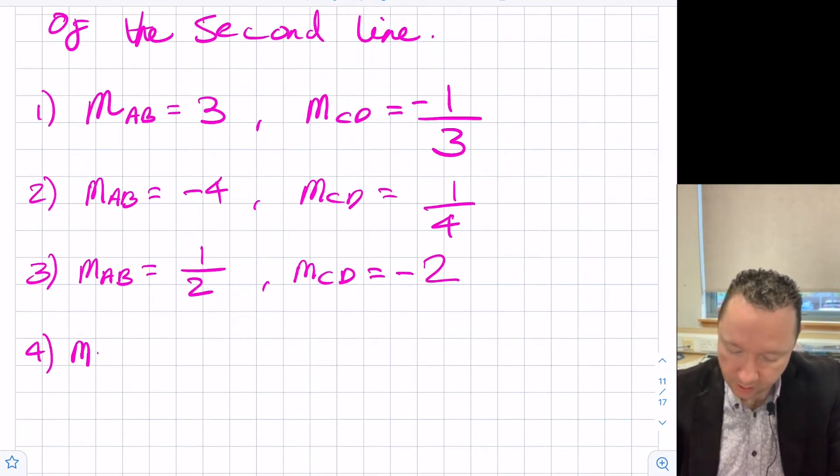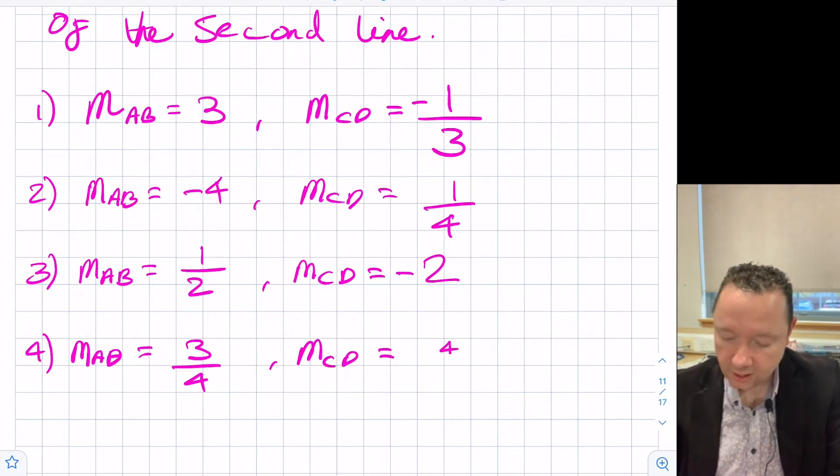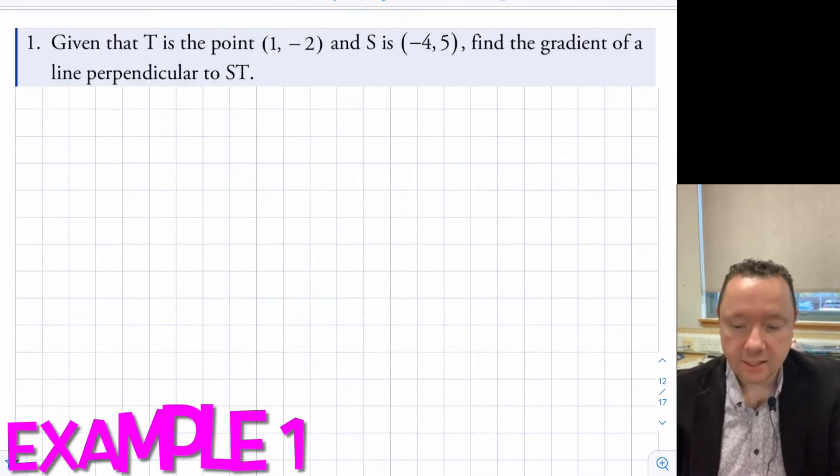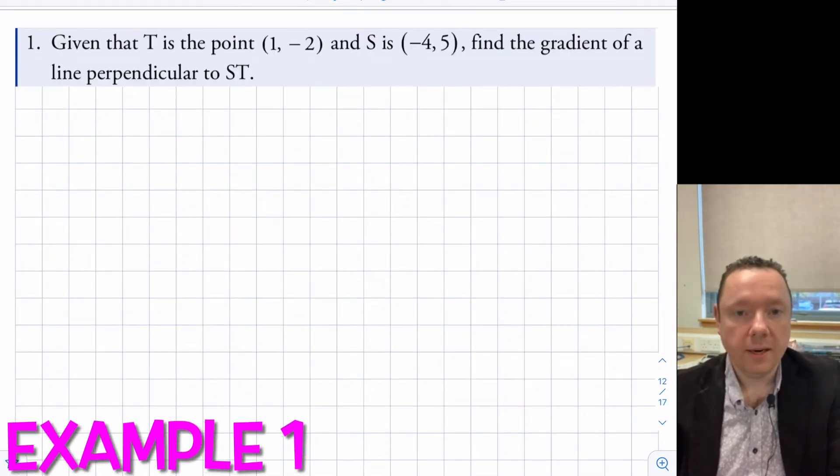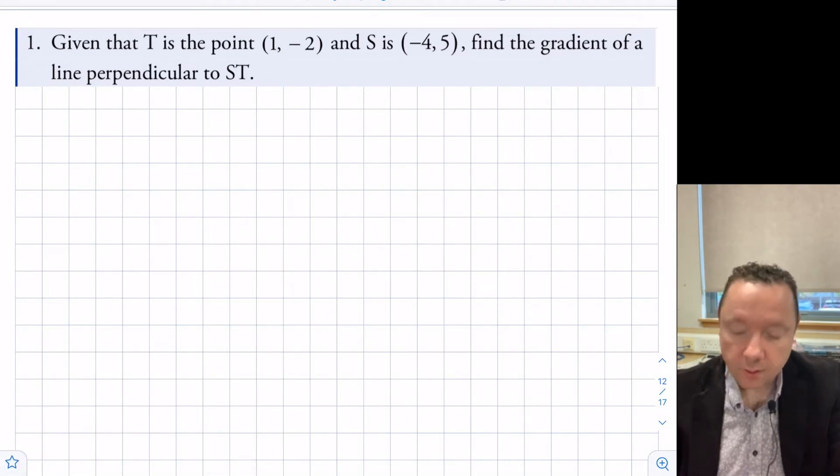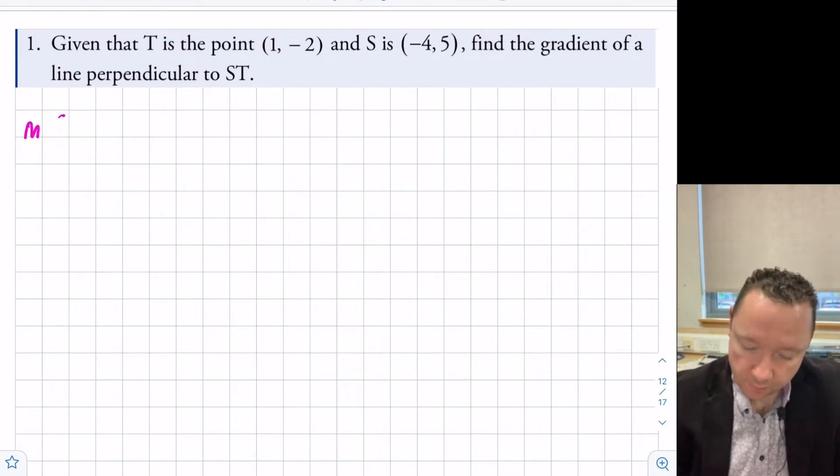The one last example, if I had the gradient of AB, let's take a harder fraction, was three quarters this time. The easiest way to get the gradient of the other one, if we're at right angles, is flip the fraction upside down, that's the reciprocal, and put a minus in front. If there's already a minus in the first one, you don't put a minus in the second one. Example one says, given that T is the point (1, -2), and S is the point (-4, 5), find the gradient of the line perpendicular to ST.